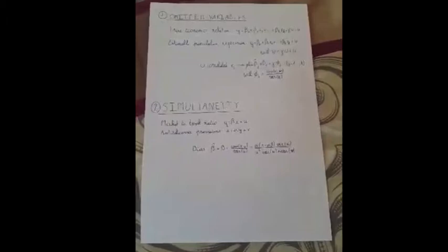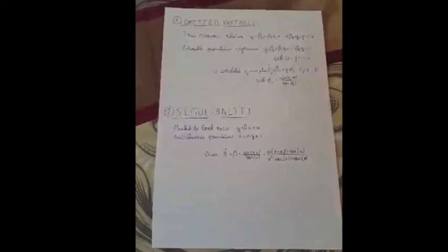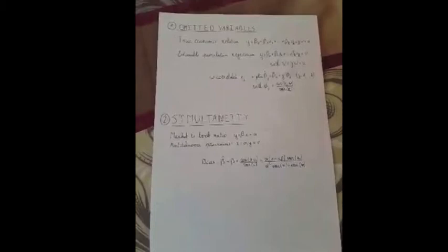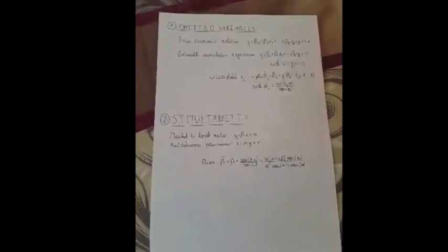The second source of endogeneity can be simultaneity. Simultaneity occurs when the dependent variable has an effect on an explanatory variable and the other way round. For example, y can be the market-to-book ratio and x can be a measure of anti-takeover provisions. The bias created using OLS is given by beta hat. Unlike for omitted variables, the bias is difficult to predict because it will depend on the magnitude of effects that cannot be known a priori.